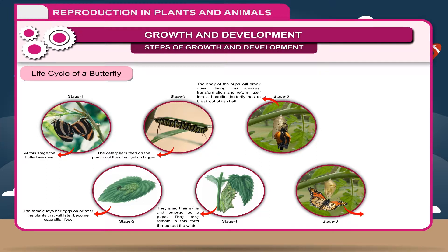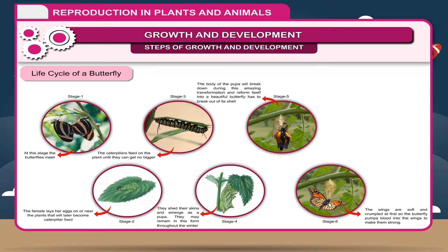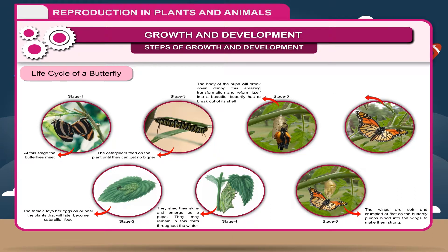Stage 6: The wings are soft and crumpled at first, so the butterfly pumps blood into the wings to make them strong. The butterfly then flies away to start the whole process again.